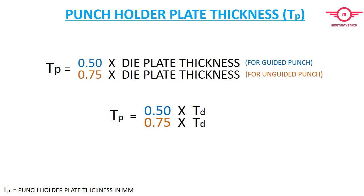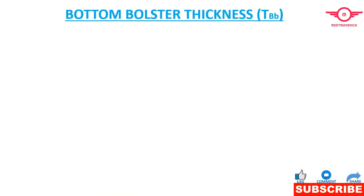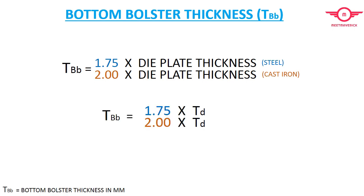Now we need to calculate the thickness of bottom poster plate, denoted as TBB. For that we need Td, which is die plate thickness. TBB is 1.75 times Td for steel and 2.0 times Td for cast iron.